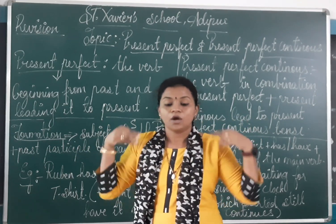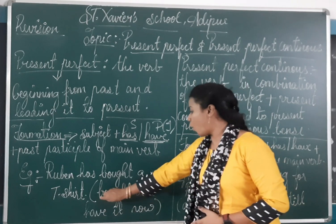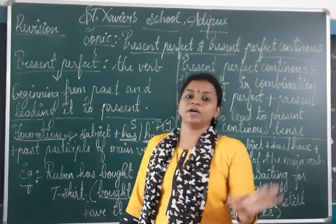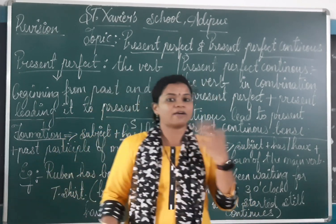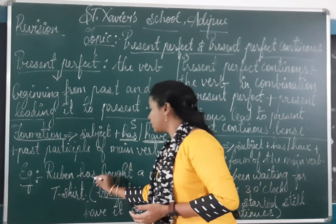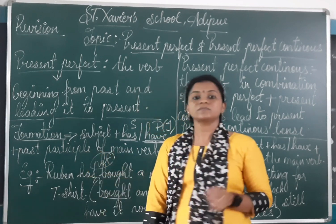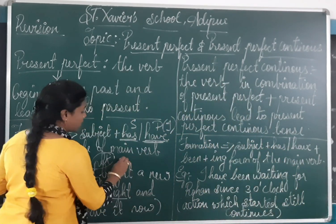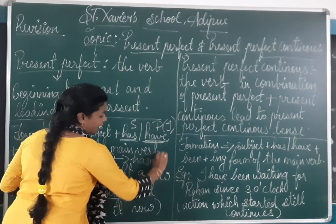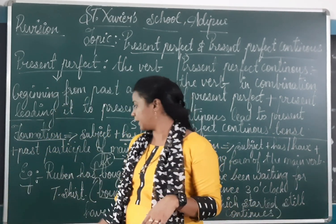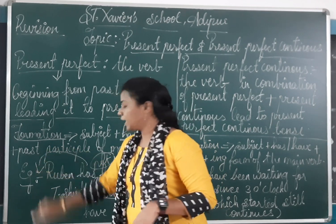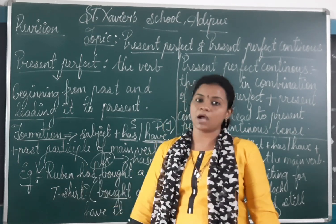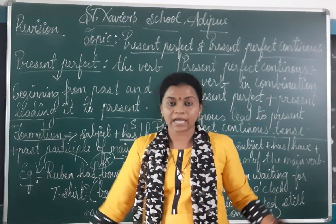You have bought a new dress — you are showing it now. The action happened before but the result is still present. So it is our present perfect tense. In that we have negative — has not or have not. For example: Ruben has not bought a new t-shirt, or the short form hasn't. And if we form a question, has goes to the beginning: Has Ruben bought a new t-shirt? This has already been taught in detail in the last video — this is just a quick revision.